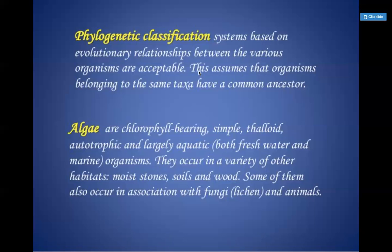Some of the algae are associated with fungi, and the best example is lichen — the symbiotic association between algae and fungus. In many cases they also associate with animals, like the sloth bear. They can survive there because they get all the required nutrients.